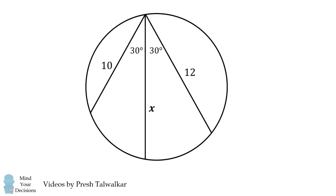We'll solve this problem by working in steps. First focus on this part of the diagram. This is a 30-degree inscribed angle corresponding to this arc of the circle.